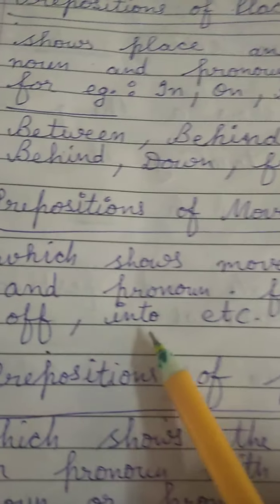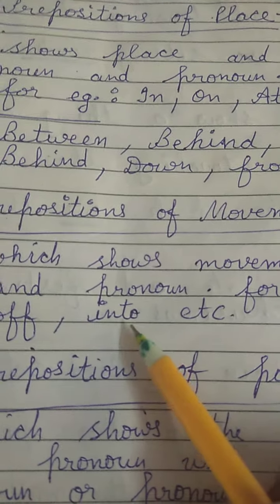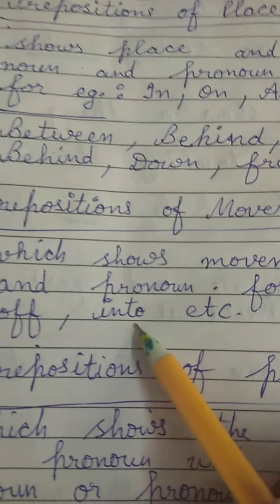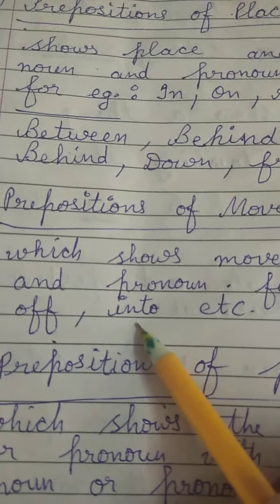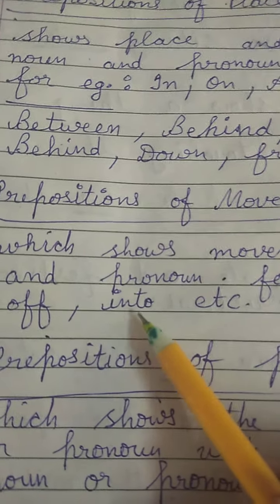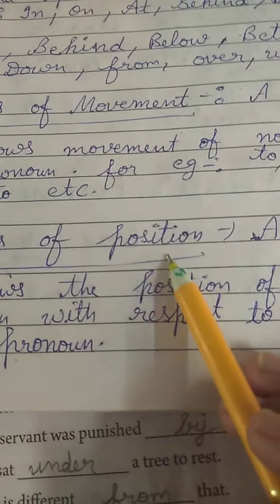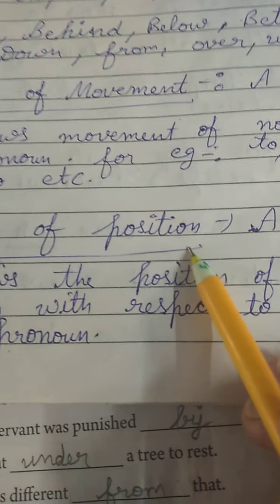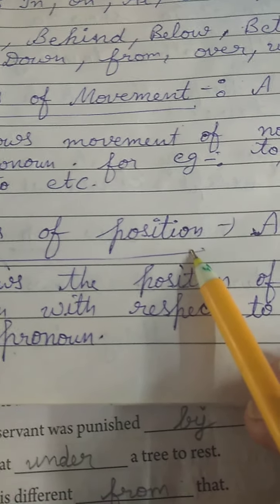Next is 'into': the cat jumped into the well — it is showing the movement of the cat. Next, preposition of position shows the position of a noun and pronoun.